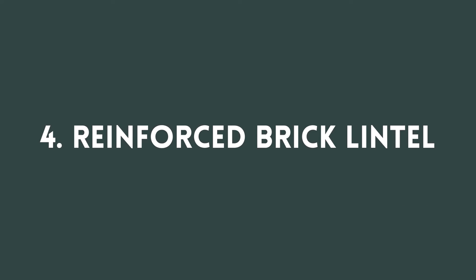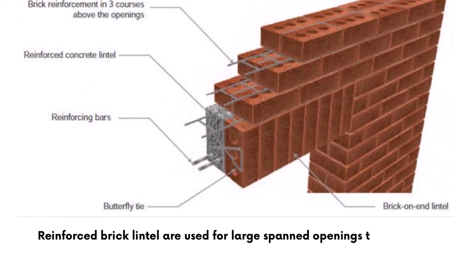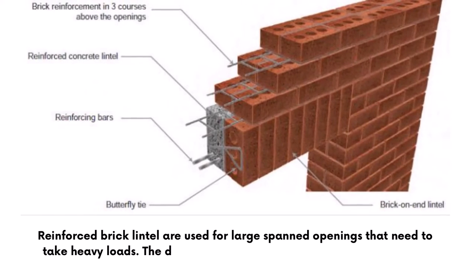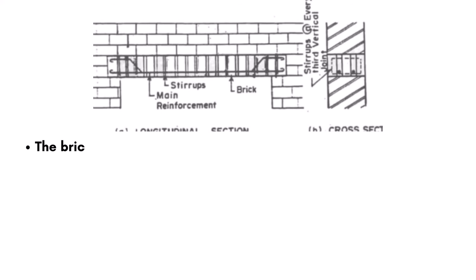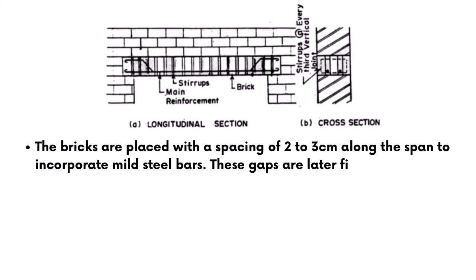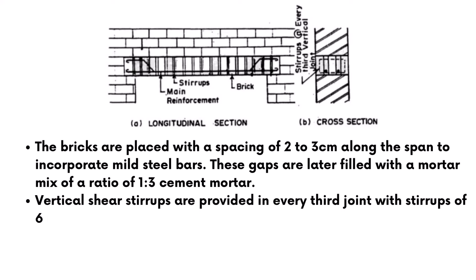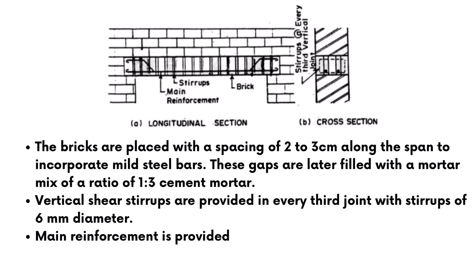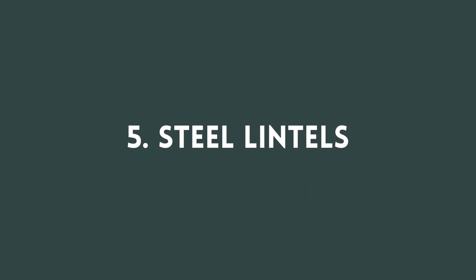Reinforced brick lintels are used for large-spanned openings that need to take heavy loads. The depth of a reinforced brick lintel is equal to 10 cm or in multiples of 10. The bricks are placed with a spacing of 2 to 3 cm along the span to incorporate mild steel bars as shown in the figure. These gaps are later filled with a mortar mix of ratio 1:3, and vertical stirrups are provided in every third joint with a stirrup of 6 mm diameter. Main reinforcement is provided at the bottom of the lintel with a diameter of 8 to 10 mm and is cranked at the ends.